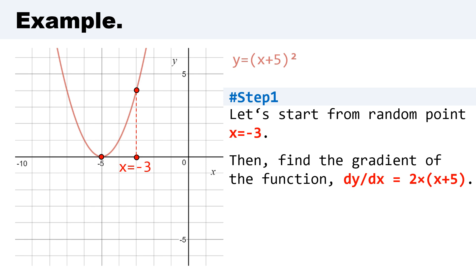Then we have to find the gradient of the function. The gradient of the function is a derivative of the function, and it is equal to 2×(x+5). It is a very simple function.